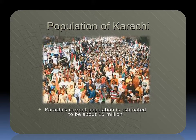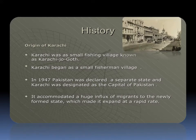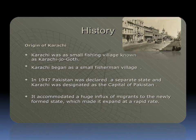Karachi's current population is estimated to be about 15 million. Karachi was originally a small fishing village known as Karachi Jogoth. In 1947, Pakistan was declared a separate state and Karachi was designated as the capital of Pakistan. It accommodated a huge influx of migrants to the newly formed state, which made it expand at a rapid rate.